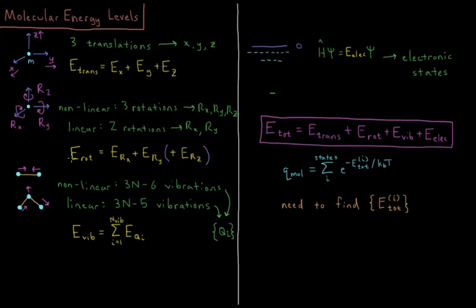So the energy of rotation is going to be the energy of rotating around the X plus energy of rotating around Y plus energy of rotating around Z if there is any energy to be had by rotating in those dimensions.